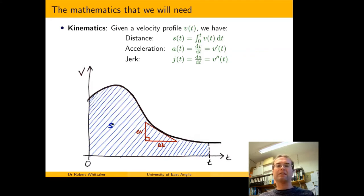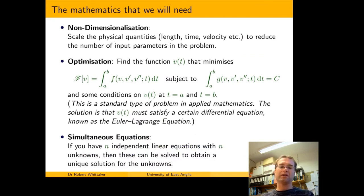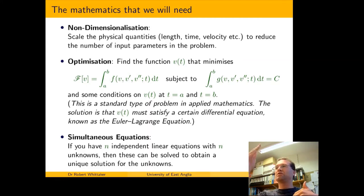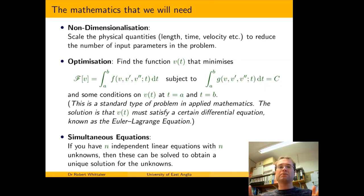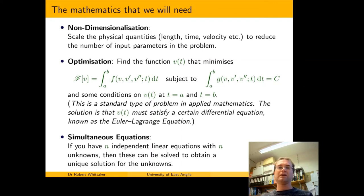Another useful technique we'll need is non-dimensionalization, which is a way of scaling out various parameters from a problem so we have fewer parameters to work with. For instance, suppose we're measuring distances in metres and we have a distance to the stopping point — say the distance to a red traffic light. Rather than measuring in metres, we could measure distance in multiples of that initial distance, defining the distance from the car's initial position to the traffic light as one unit. This reduces the number of parameters because the stopping distance no longer appears explicitly.